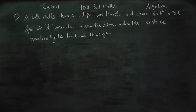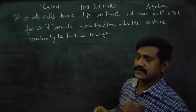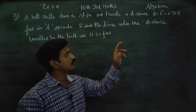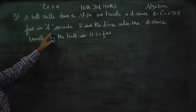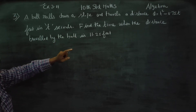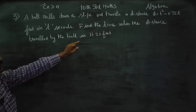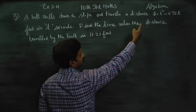Dear 10th standard students, I am Metro Karnagaran. In exercise number 3.11, sum number 3: a ball rolls down a slope and travels a distance d equal to t squared minus 0.75t in t seconds. Find the time when the distance traveled by the ball is 11.25.